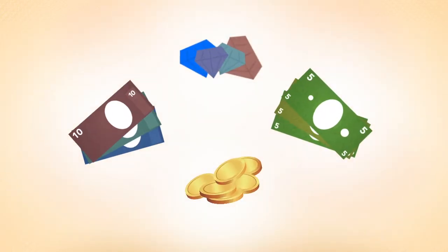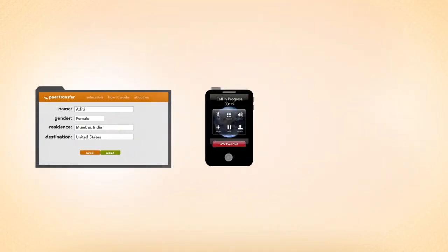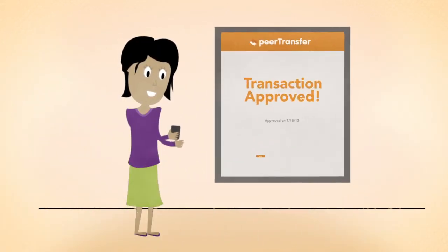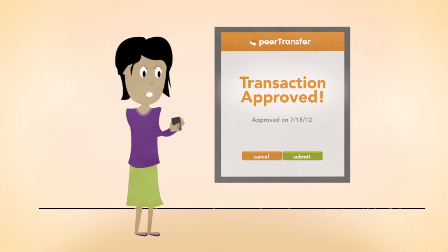First, Peer Transfer lets you choose how to pay. Aditi can pay for college online at the Peer Transfer website. She can do it by phone. Or she can go to her bank. It only took a few minutes to transfer the full amount she owes her university to Peer Transfer.